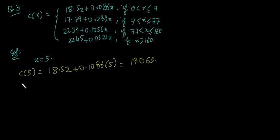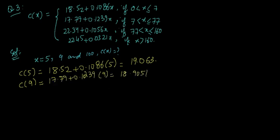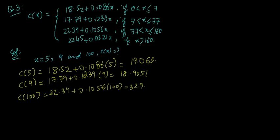Similarly, we find the cost for 9 kWh: since x equals 9 lies in the second piece from 7 to 77, we use the second formula and get 18.9051. For x equals 100 kWh, we use the third piece of the function and get 32.9. So part A gives us the cost of consuming 5 kWh, 9 kWh, and 100 kWh of electricity.